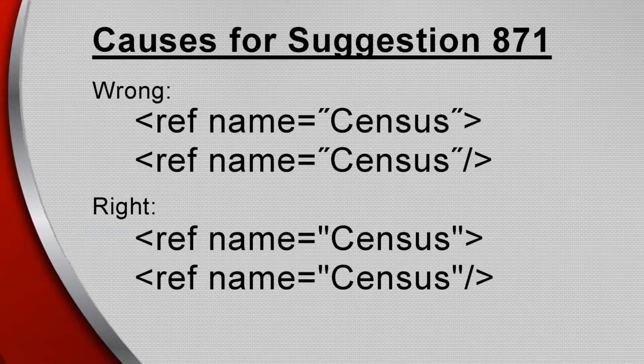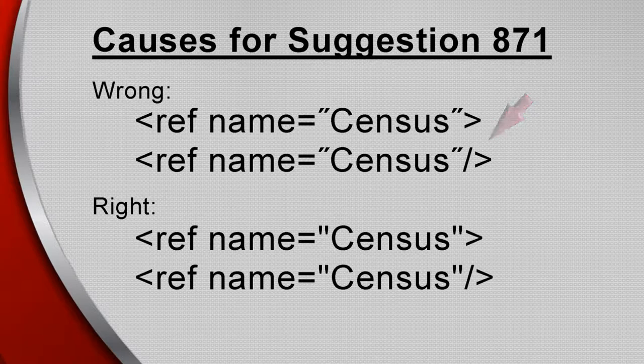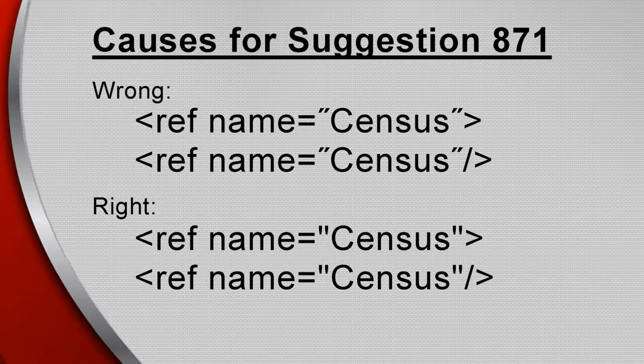Suggestion 871 is triggered when a profile is using angled double quotes in a named inline reference. Straight double quotes must be used. This is often caused when an inline named reference was pasted from Word or another editor, which automatically changed the quotes. The solution is to simply retype them.